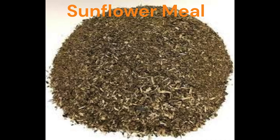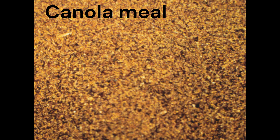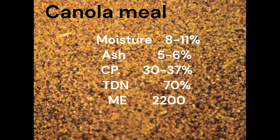Sunflower meal is also an important feed ingredient. It contains moisture 8-11%, ash 5-6%, crude protein 30-37%, total digestible nutrients 70%, and metabolizable energy 2,200.